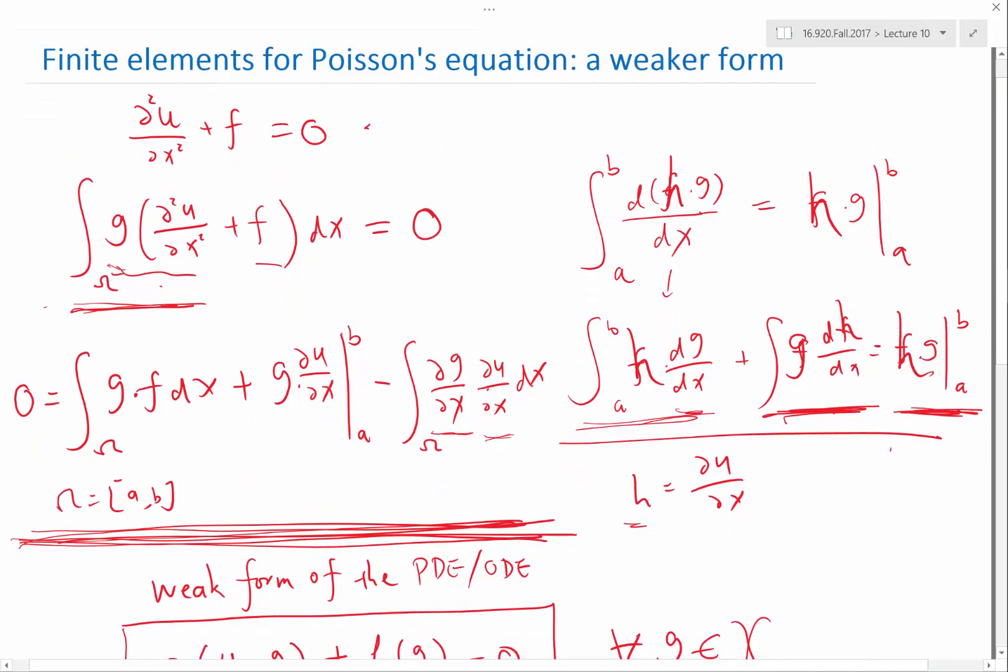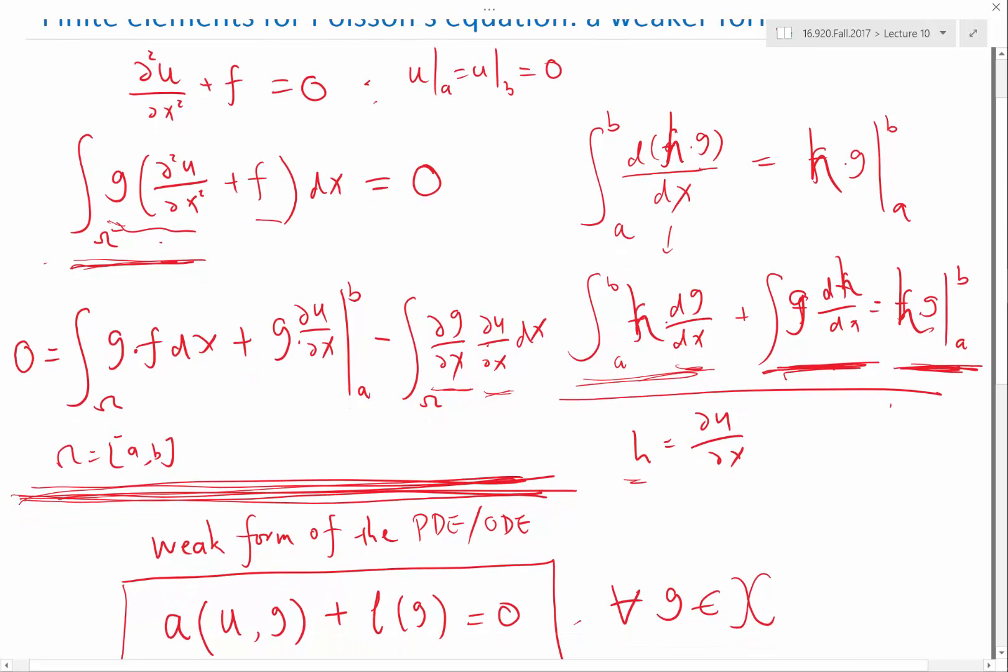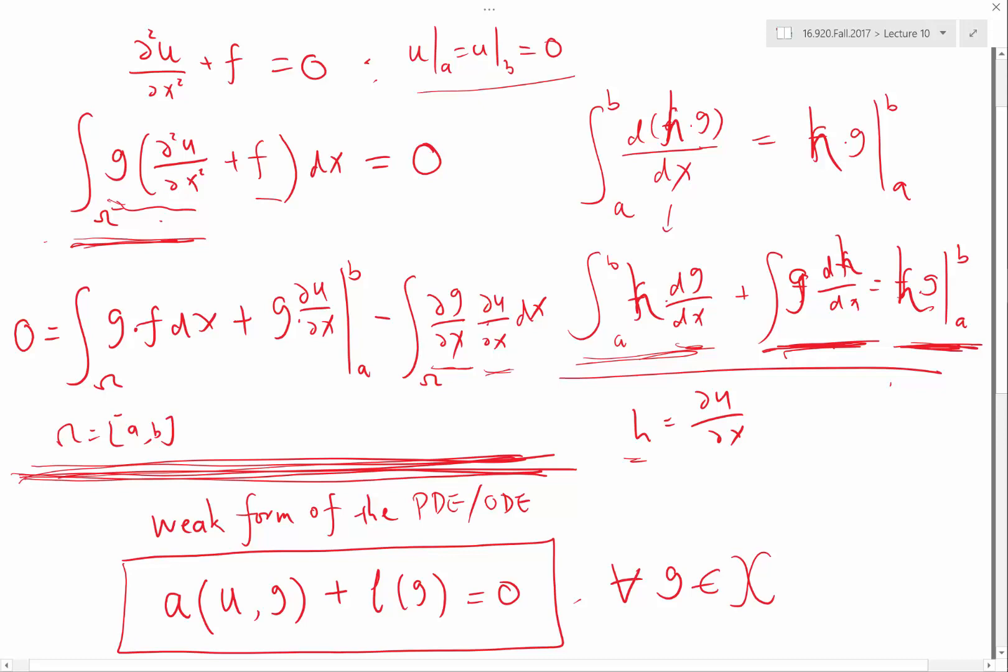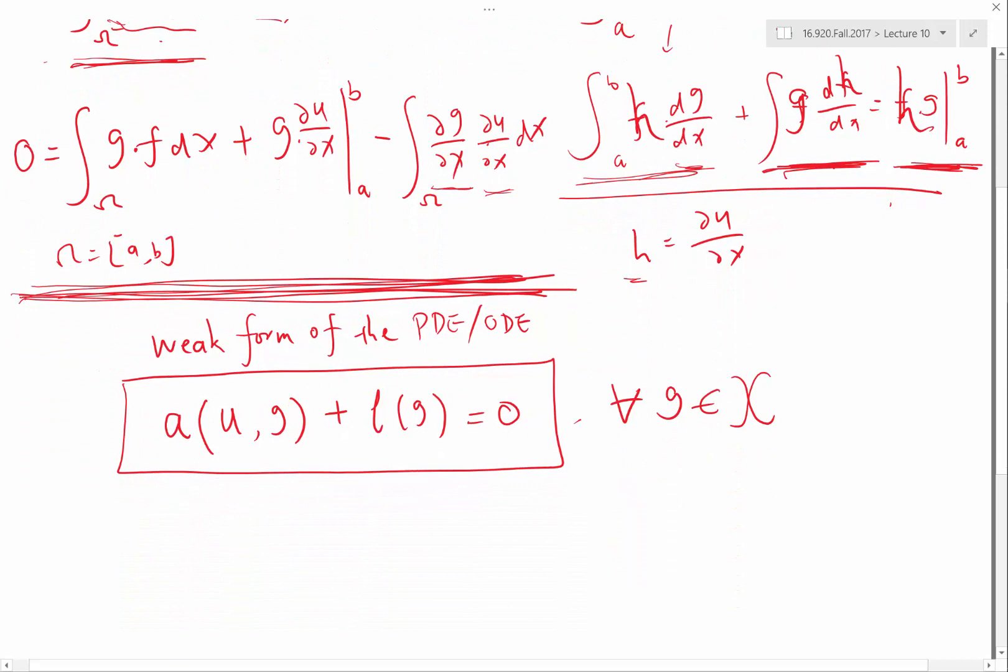if the boundary condition here is that u at A is equal to u at B is equal to 0. All right, so if this is the case, we actually cannot get rid of anything in this equation. So, in this case, my A is going to be, so the first term,